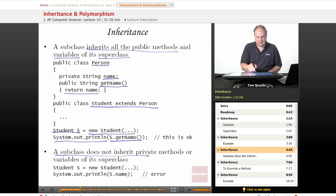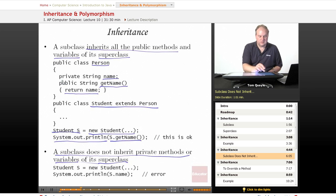A subclass, however, does not inherit any private methods or variables of the superclass. So, in the superclass person, the string called name is a private variable.